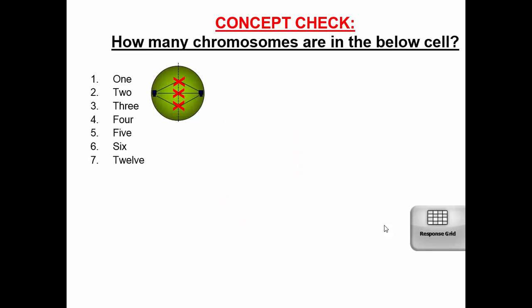Quick clicker question: when you look at this cell, how many chromosomes are here? Are they duplicated or unduplicated? How many sister chromatids are there? What is that dotted line down the center of the cell, and what are those two little squares at each pole of the cell? Those are the questions you'd want to address.